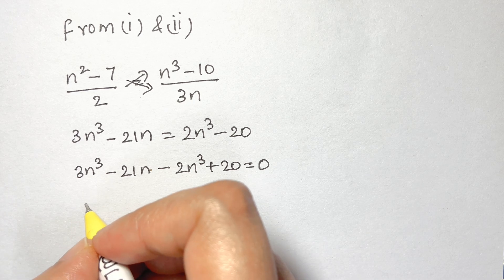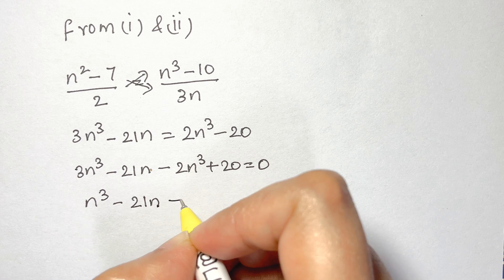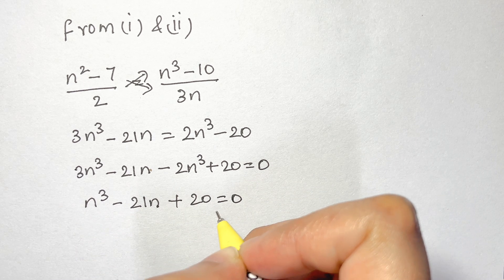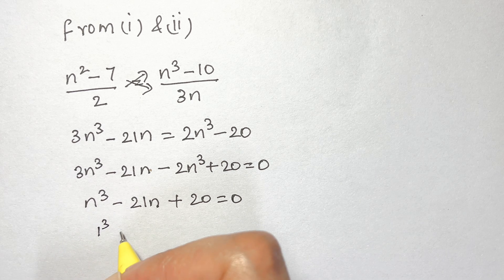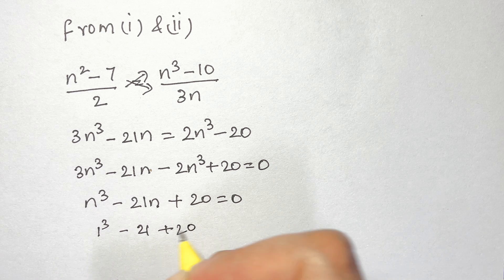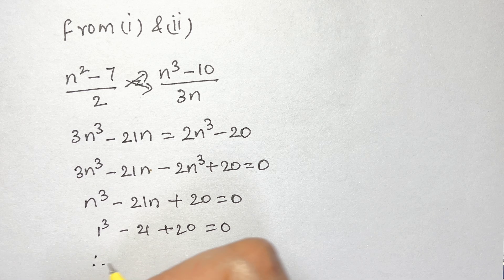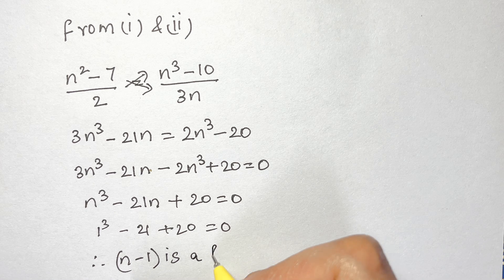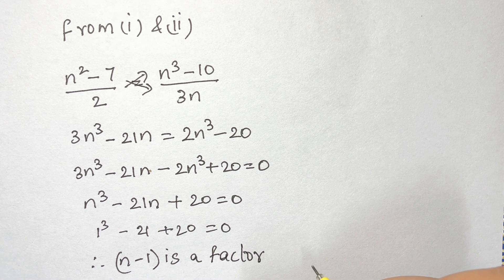Simplifying, we get n cubed minus 21n plus 20 equals 0. Testing n equals 1: 1 cubed minus 21 times 1 plus 20 equals 0. So n minus 1 is a factor.